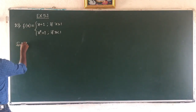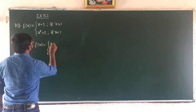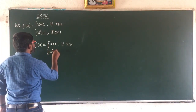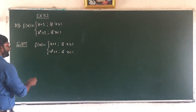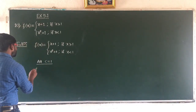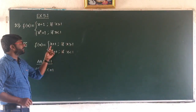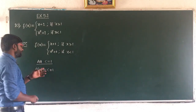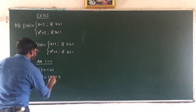f(x) equals x plus 1 if x greater than or equal to 1, and x square plus 1 if x less than 1. At c equal to 1, f(c) equals c plus 1. Since at x equal to 1 the function is x plus 1, f(1) equals 1 plus 1 which is 2. This is the value of the function.